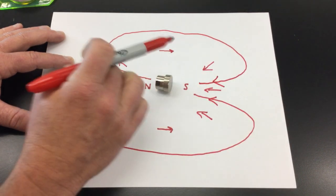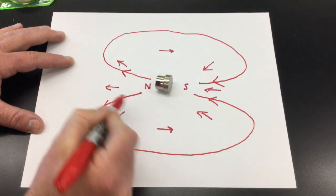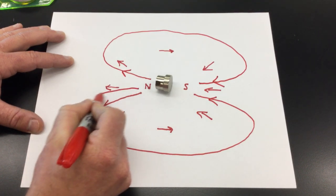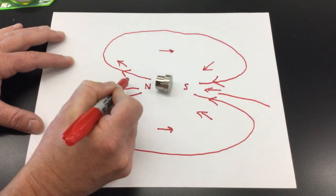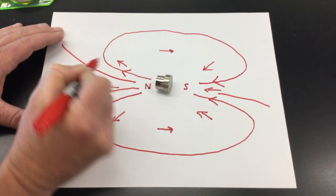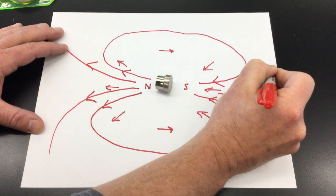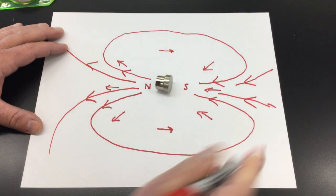So over here, it's pointing toward the South Pole. Over here, it's pointing away from the North Pole. So if you build this up after a while, what you see is this general pattern of the field lines pointing away from the North Pole and then wrapping around and coming back into the South Pole.